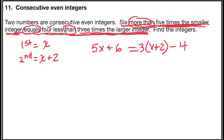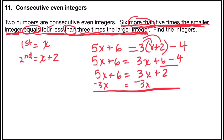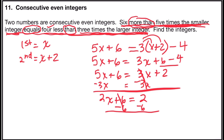So my equation says five x plus six equals three times x plus two, minus four. Now I can solve. The left side is already simplified. The right side has a distributive property: three times x is 3x, three times two is six, minus four. Six minus four is two, so that's 3x plus two. Now I'll gather variables on one side: subtract 3x from both sides. Five x minus 3x is 2x plus six equals zero plus two, which is two.